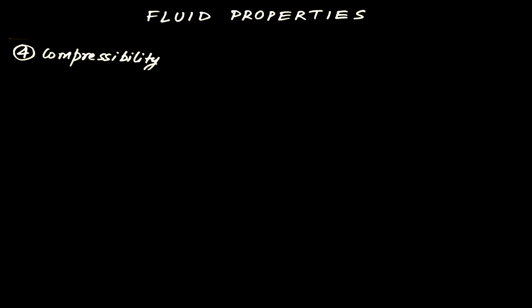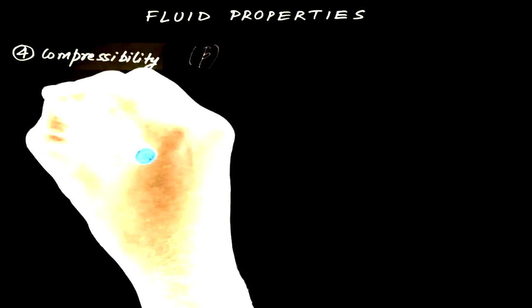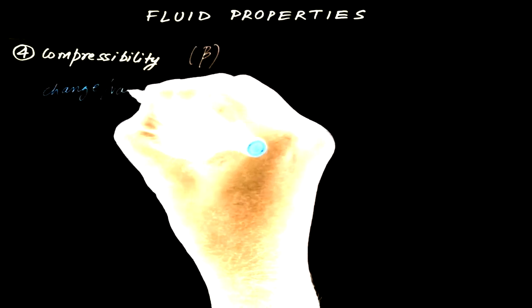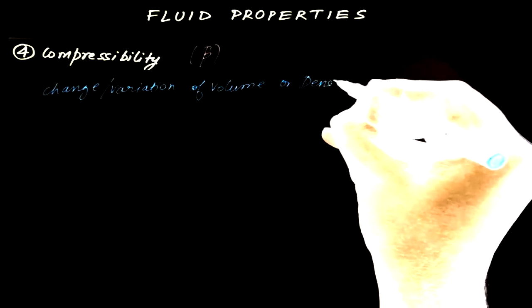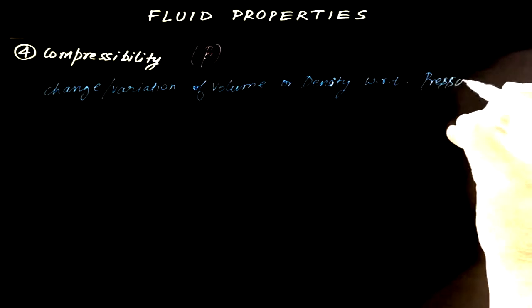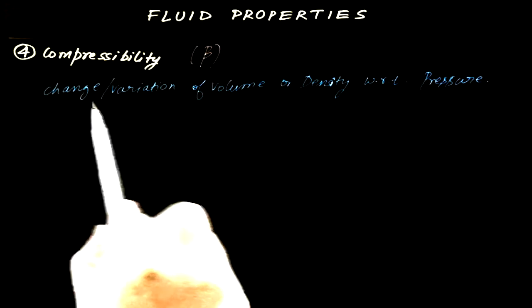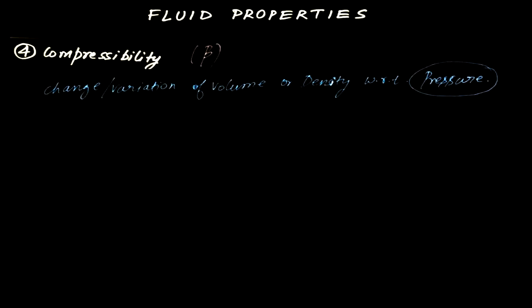The next topic for discussion is compressibility. It is denoted by beta, and it is defined as the change or variation of volume or density with respect to pressure. Let us discuss this with an example.